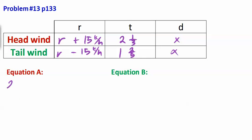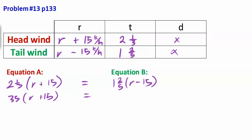So the first equation would be 2 and 1 third times quantity R plus 15. And the second equation would be 1 and 2 fifths times quantity R minus 15. And these are equal. So you can multiply both sides by 15. So this would be 35R plus 15 equal to 21R minus 15. And you could divide it by 7 because the coefficients are divisible by 7. Distribute.